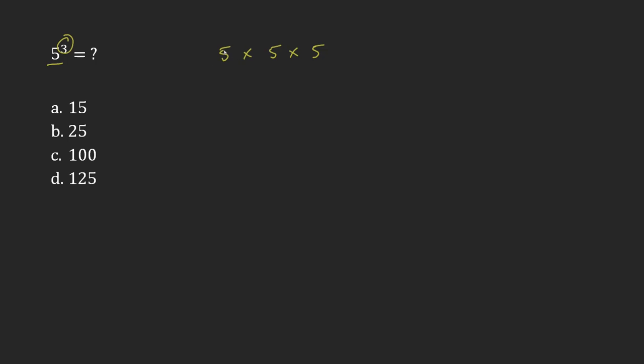And so this is pretty simple, it's just 5 times 5, that is 25, and if I multiply 25 times 5, that's going to give me 125.